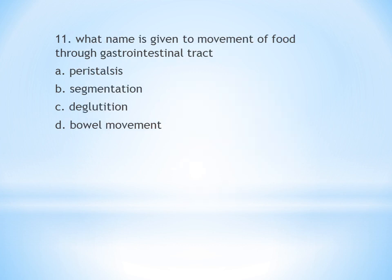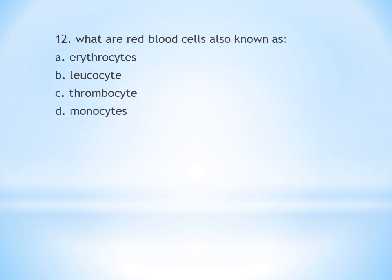Question 11: What name is given to movement of food through the gastrointestinal tract? A. Peristalsis. B. Segmentation. C. Deglutition. D. Bolus movement. The movement of food through the gastrointestinal tract is known as peristalsis. The answer is A.